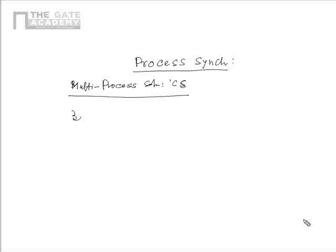This well-known multi-process solution is called Bakery's Algorithm. Here we have n processes, and these processes share some common variable in the critical section. They try to enter the critical section to finish execution in a correct and consistent manner.